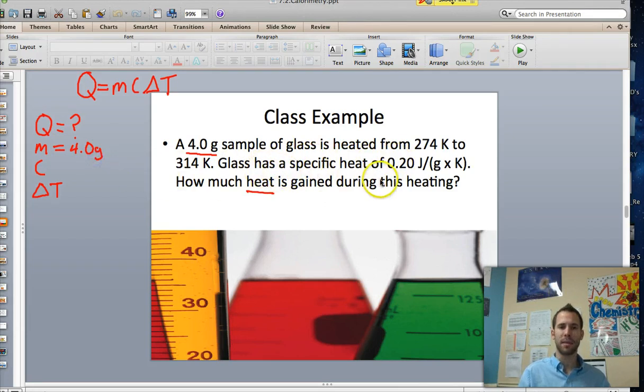It says glass has a specific heat of, so we know that this number, this value is going to be a specific heat. And that is 0.2 joules per gram Kelvin. And the reason why it's joules per gram Kelvin, it's telling us what units to use when we cancel out these units here. And then the delta T finally, which is the change in temperature.